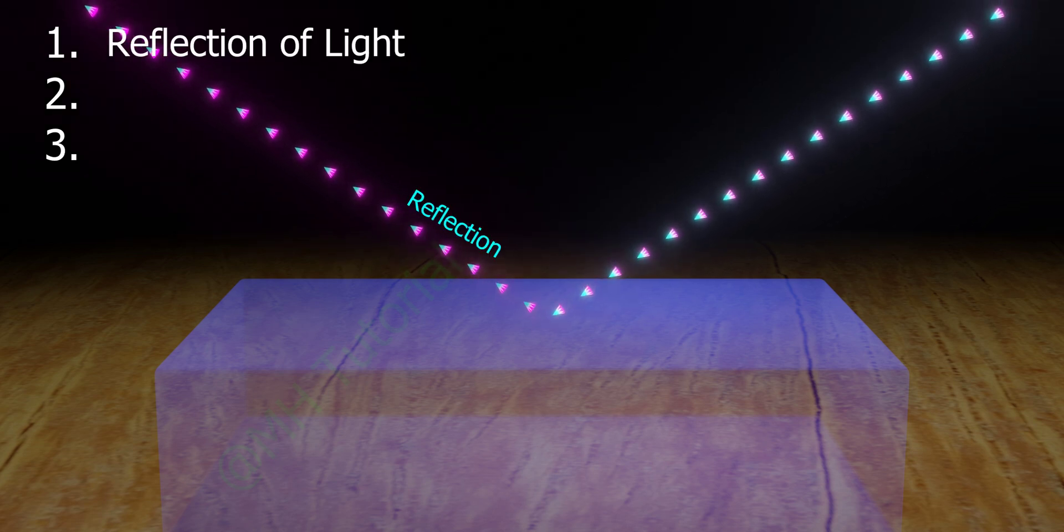When a ray of light approaches an interface of another medium, three different incidents may occur. A portion of the ray travels back to first medium. It is called the reflection of light.